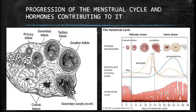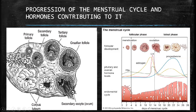Now we're going to look at the hormonal regulation of the menstrual cycle using a diagram. What you need to understand is the structure on your left — this shows the ovarian cycle. Here you can see the primary follicle, which plays a very important role. After it is developed, estrogen starts to be secreted by this primary follicle.